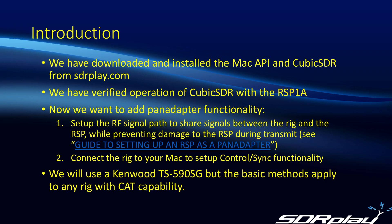We've already downloaded and installed the Mac API and the CubicSDR program from sdrplay.com, and we've verified operation of CubicSDR with the RSP1A, and now we want to add pan adapter functionality to our rig. There are two important parts to that. The first is to set up the RF signal path so that you're sharing signals between the rig and the RSP, while preventing any possible damage to the RSP during transmit. We've covered that fairly extensively in other app notes available for download from sdrplay.com — look on the app notes tab for the guide to setting up an RSP as a pan adapter. The second part we're going through today is how to connect the rig to your Mac to set up control or sync functionality between the two.